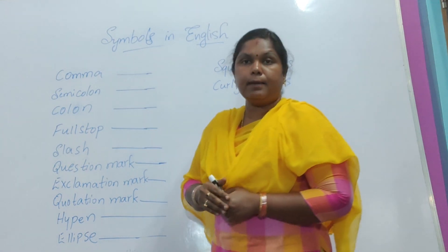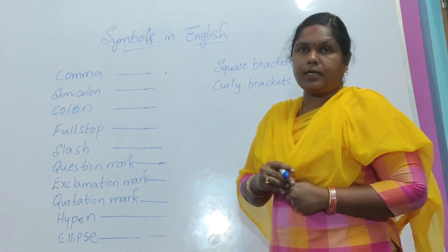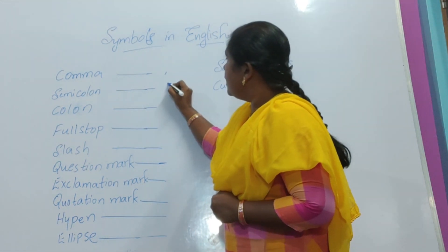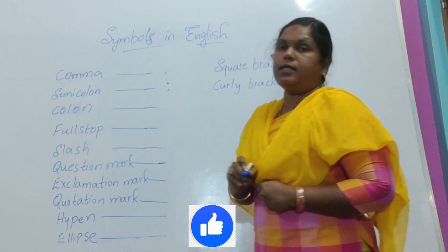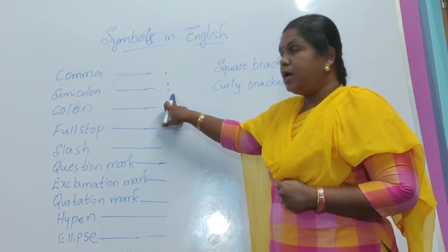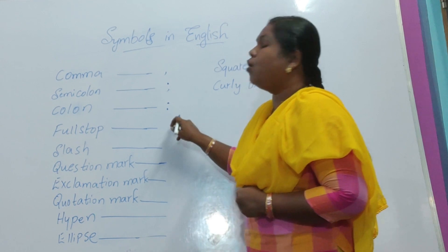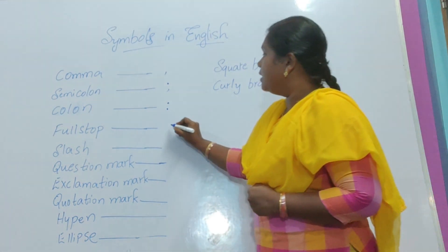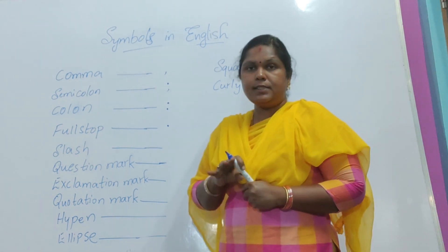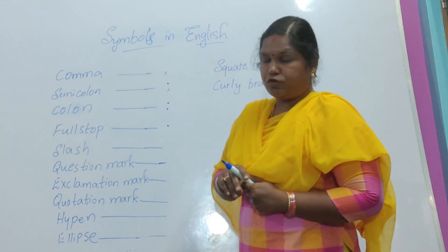The first and foremost is the comma. A dot and a comma together makes a semicolon, and two dots make a colon. Next comes the full stop — a single dot. Full stop is used at the end of every sentence. When you complete a sentence, we place a full stop at the end.